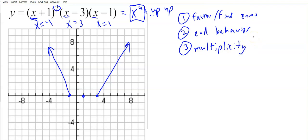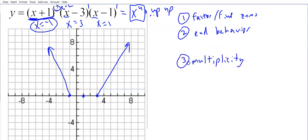Looking at the factors: one has an even exponent (multiplicity of two), while the others have an exponent of one (odd multiplicity). Anytime a factor has a multiplicity of two, at that solution — negative one — the graph is not going to cross the x-axis; it's going to bounce. Let's reorder slightly: step 3 will be intercepts, and step 4 will be multiplicity. To find the intercepts, we already found the x-intercepts. Now let's find the y-intercept.